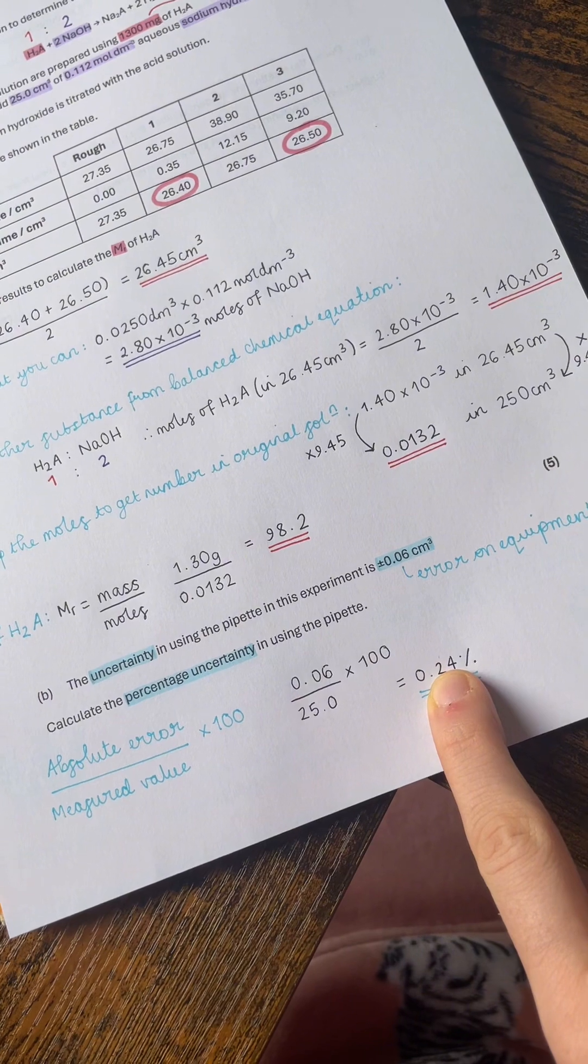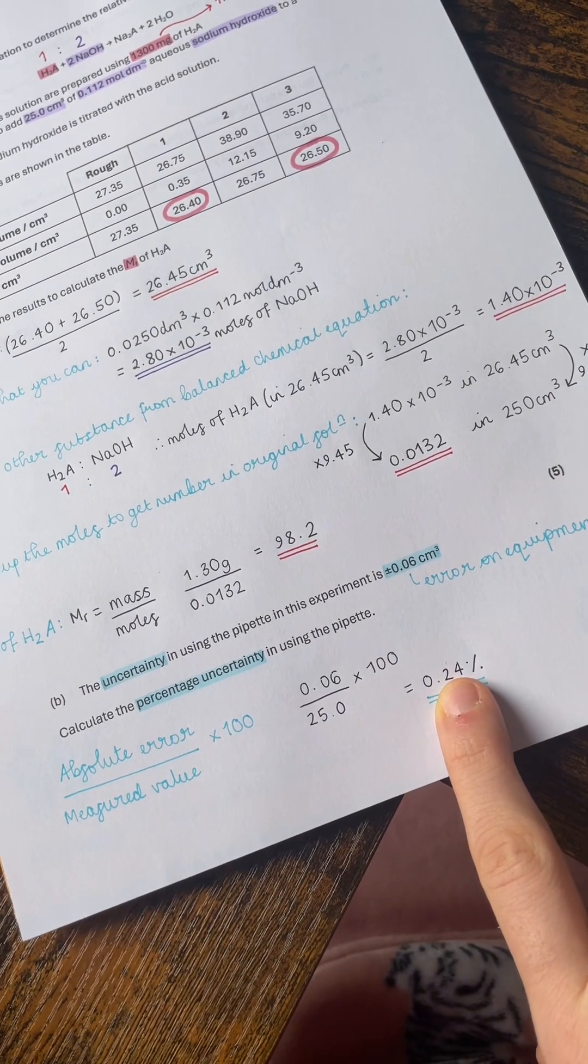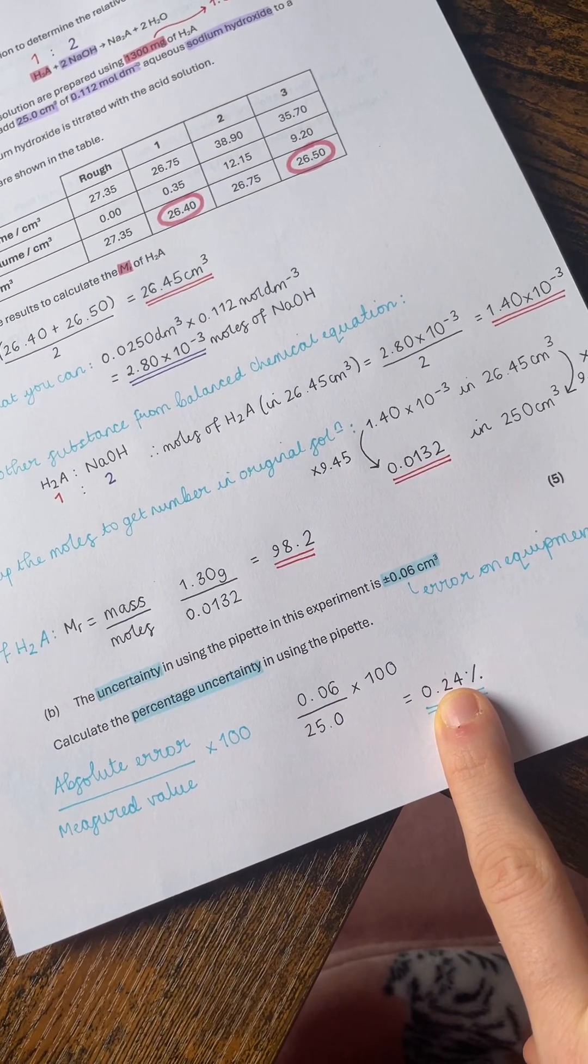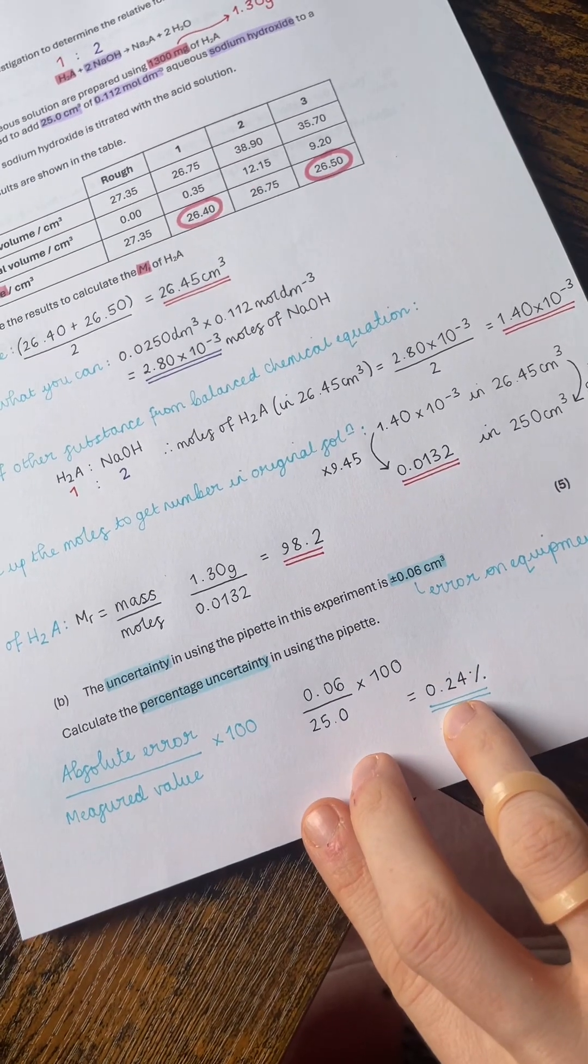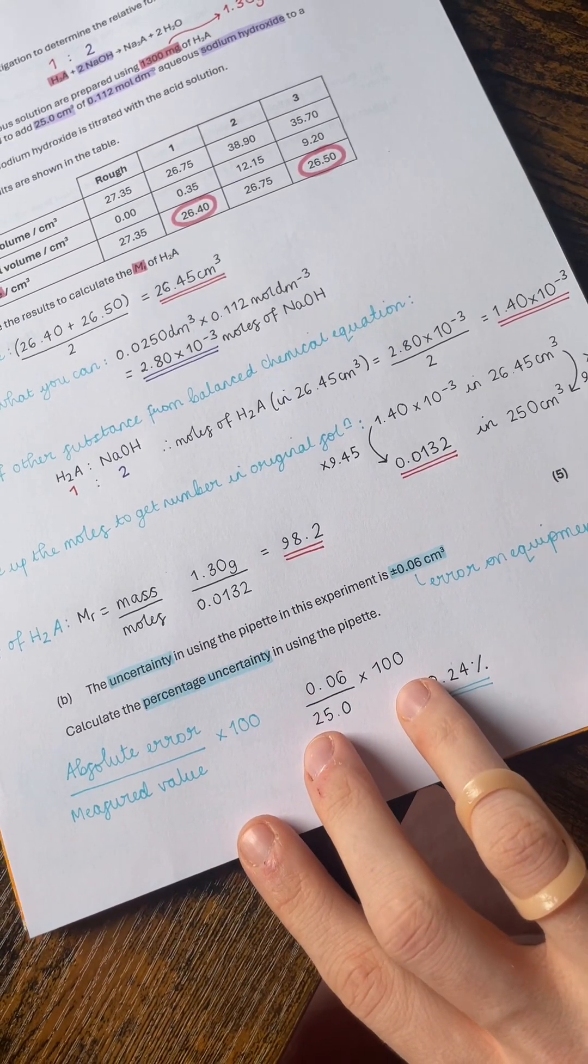Ideally, we'd probably want to give it to one significant figure only because 0.06 is to one significant figure, so 0.2. They have accepted 0.24 here. Either would be acceptable, and in fact 0.2 is probably a better answer. But 0.24, like I say, was accepted on the mark scheme here.